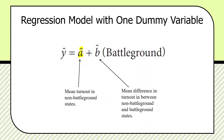B-hat is going to tell us the mean difference in turnout between non-battleground and battleground states. Our hypothesis suggests we're going to find a significant positive coefficient on b-hat. It's important to emphasize that b-hat won't tell us the turnout in battleground states — it tells us the difference between non-battleground turnout and battleground turnout.